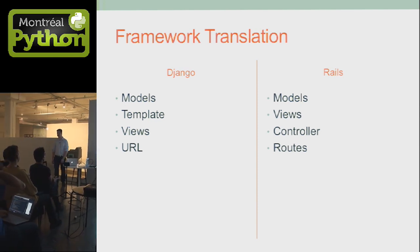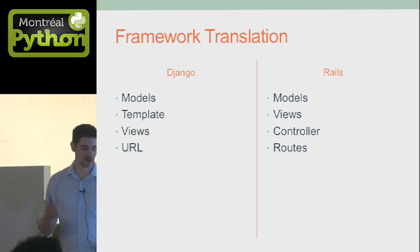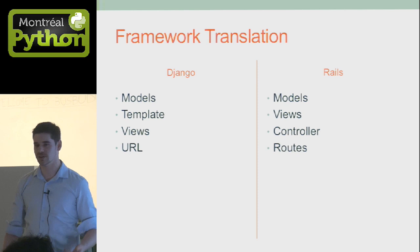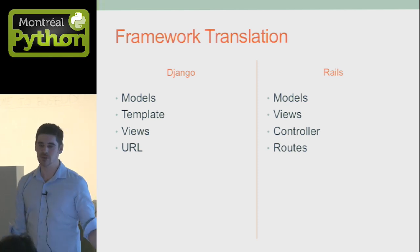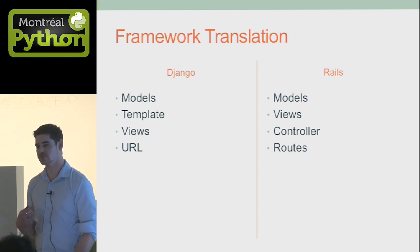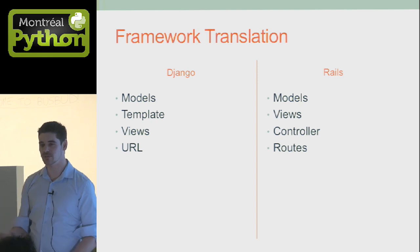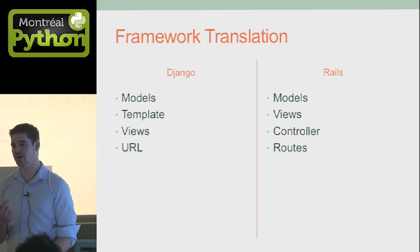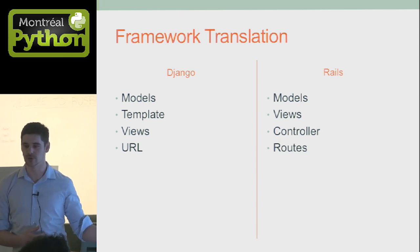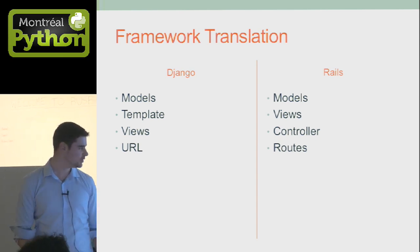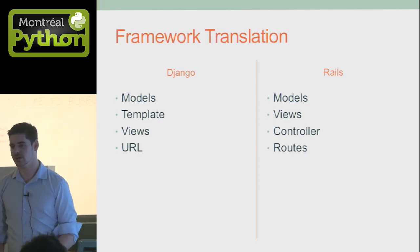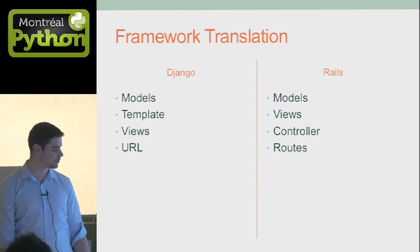Let's do some translation. Django on the right, Rails on the left. What you call models, we also call models — that one is easy. What you call templates is what we call views, so just remember that. If I say view, it really means a template for you. But if I'm speaking about controllers, it means views for you — that one is kind of ugly. And the last one, URLs and routes, is pretty easy. It's really the view terminology that is harder to understand.